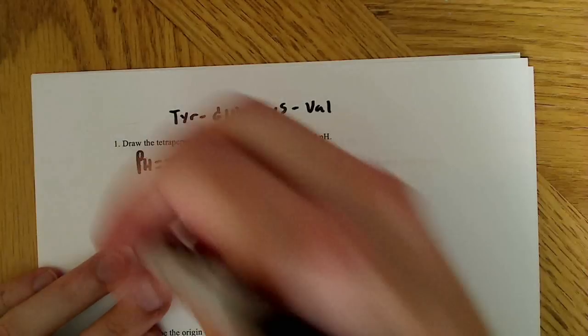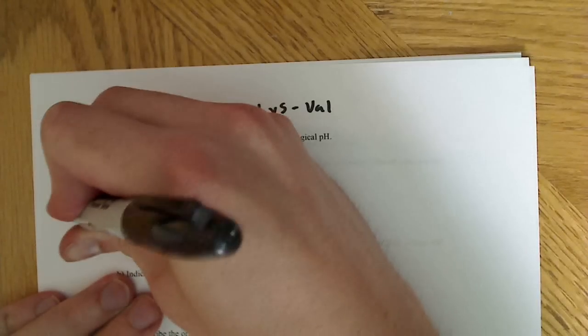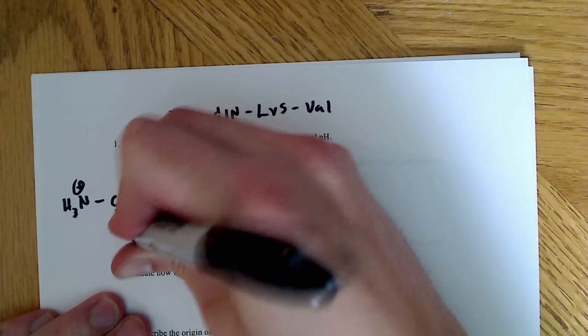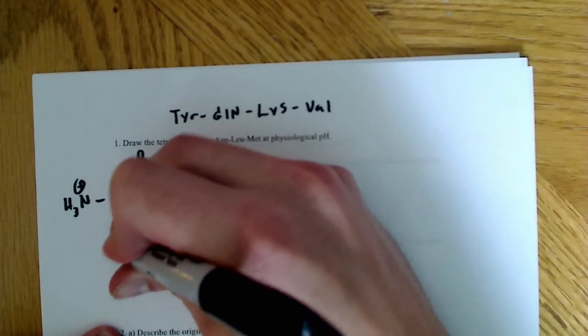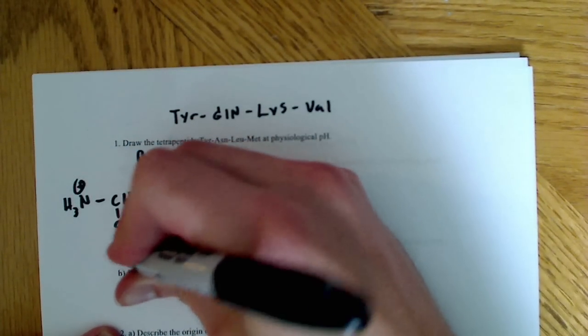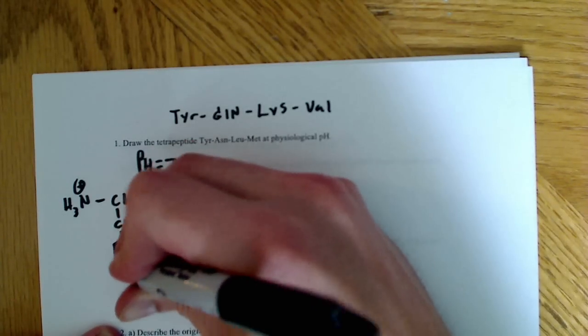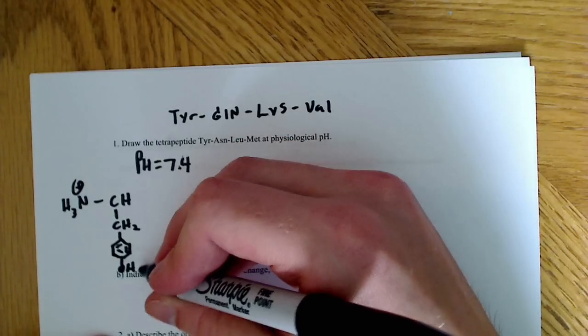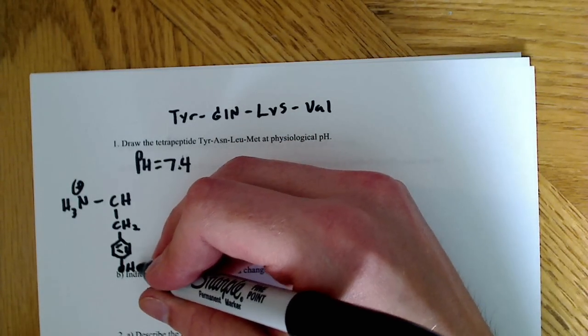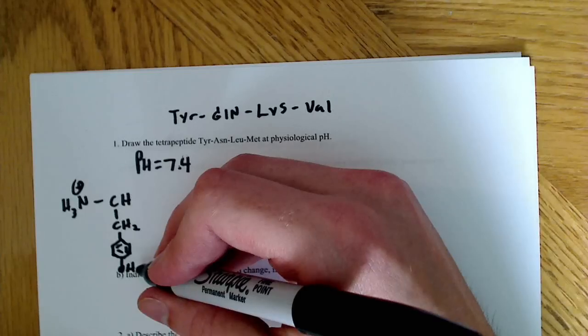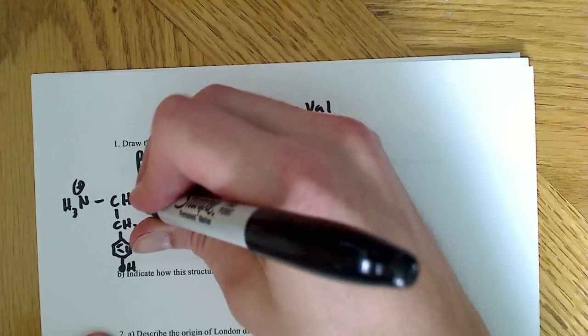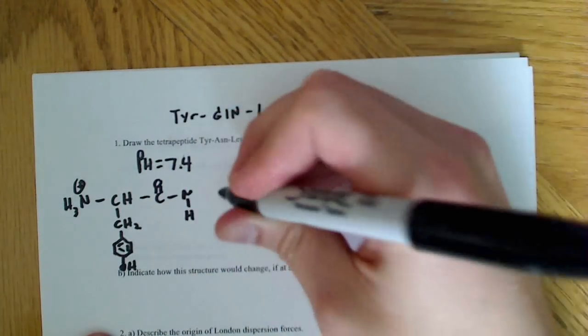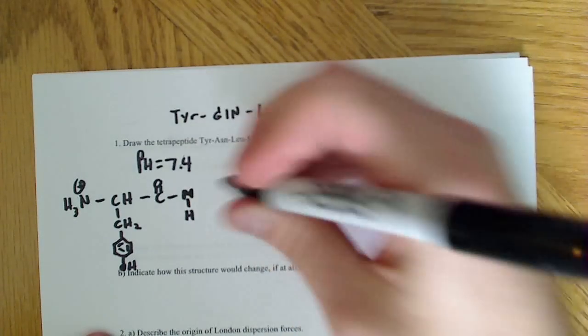To begin with I'll draw NH3 plus over here, CH, I'm going to leave tyrosine even though we've covered this quite a bit in other videos. It just has the benzene ring, a CH2, and the OH here. At 7.4 it's not going to be deprotonated because the pKa of the side chain is 10.5. We draw the C double bond O, and then we show the peptide bond here.